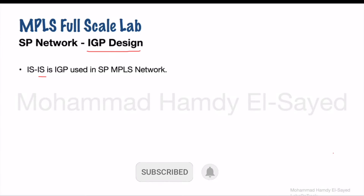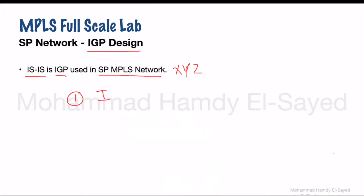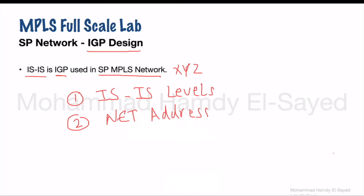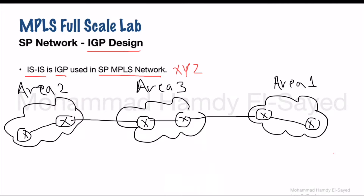As we selected ISIS to be the IGP protocol in the SP MPLS network for Company XYZ, we need to discuss more details about the ISIS design. We will discuss three main points: ISIS levels — when we configure the router with ISIS protocol we must specify its level; second, the NET address — any ISIS router must be specified with a NET address to identify itself; third, ISIS cost.